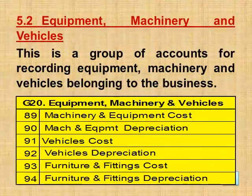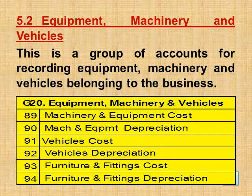Section 5.2 Equipment, Machinery and Vehicles, Group G20. This is a group of accounts for recording equipment, machinery and vehicles belonging to the business. This includes: Machinery and Equipment Cost, Machinery and Equipment Depreciation, Vehicles Cost, Vehicles Depreciation, Furniture and Fittings Cost, and Furniture and Fittings Depreciation.